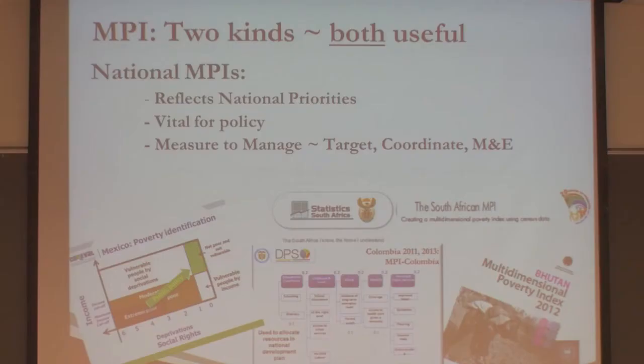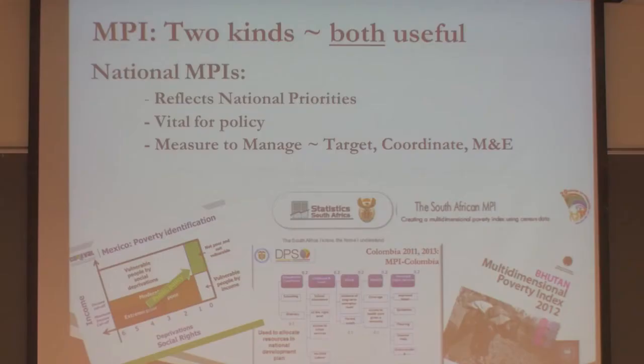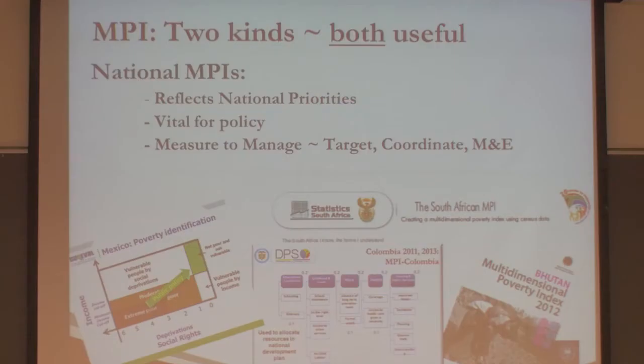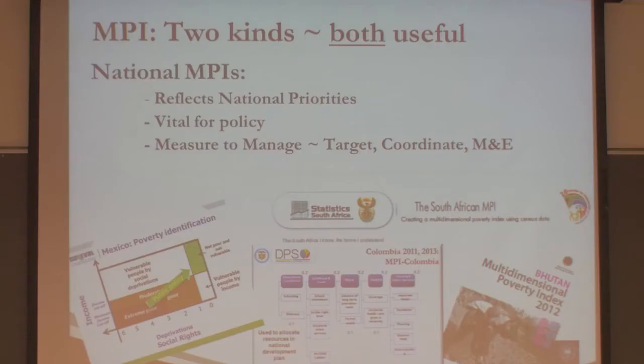Now we're turning to a different kind of measure, which is a national measure. Just like there's a global measure, governments are using national measures designed by their own teams that really reflect the policy priorities and design criteria of the countries. The national measures are much more important than the global for policy purposes. When it comes to national MPIs, they can be used much more directly for different kinds of policies.